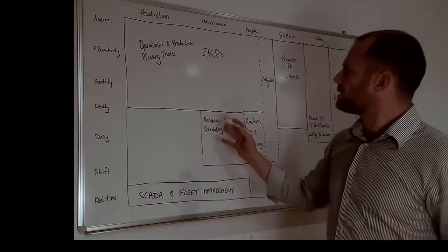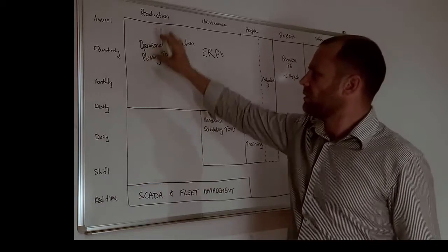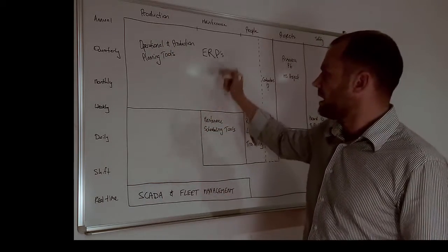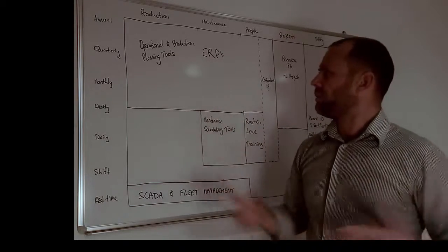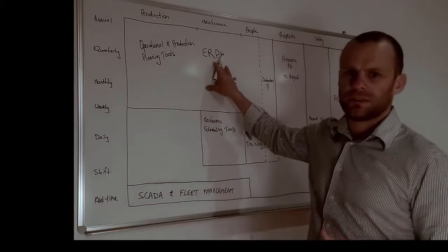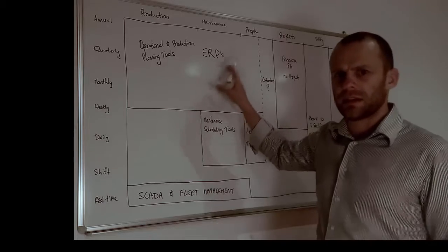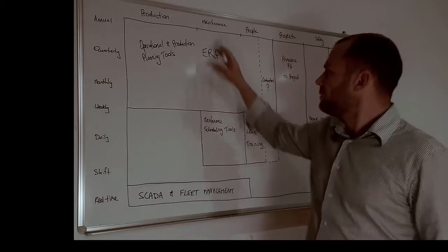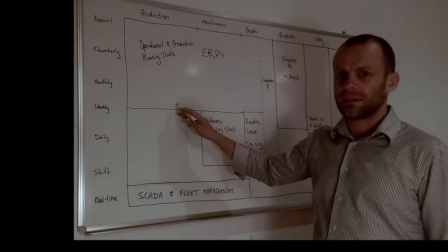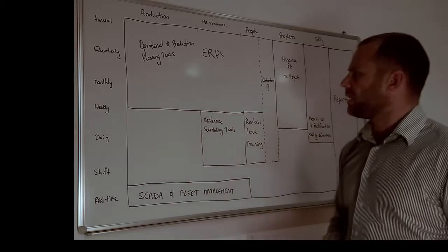If we're thinking about the production space, at the annual, quarterly, monthly, down to about weekly level, we tend to have quite large operational production planning tools which may or may not connect in with your enterprise resource planning tools like an ERP or SAP. But these things seldom go lower than the weekly level in granularity — they're used mainly for budgeting and long-term planning of an operation.